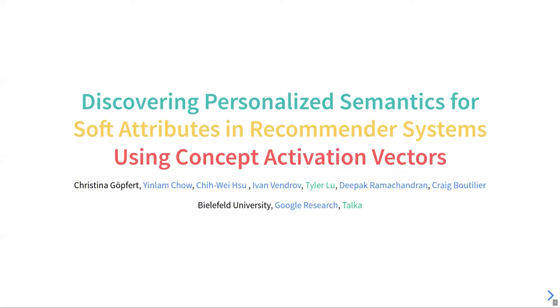We want to look at personalized semantics, which is one of our constraints. Soft attributes, which I'm going to talk about in a moment. And our method is using concept activation vectors.